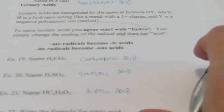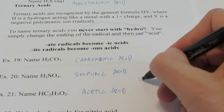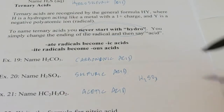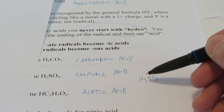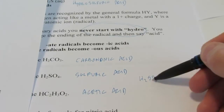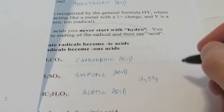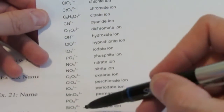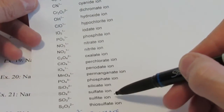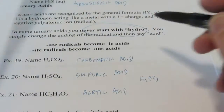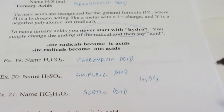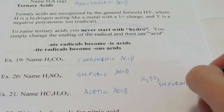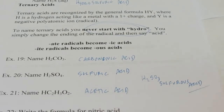What if I had H₂SO₃? You recognize it as a ternary acid — starts with H and bonded to a polyatomic ion. These don't have to have an Aq after them to be considered acids. The SO₃ name is sulfite, I-T-E. And -ite radicals become -ous acids. So this would be called sulfurous acid.